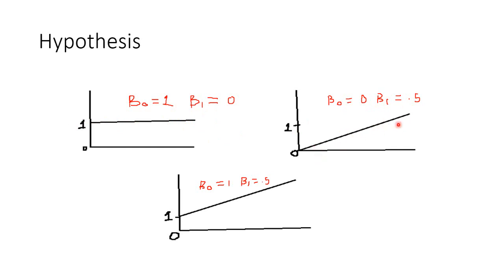Similarly, if beta0 is 1 and beta1 is 0.5, we have a hypothesis line like this. We can have different kinds of hypothesis lines based on the values of beta0 and beta1.